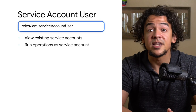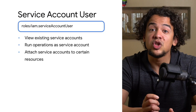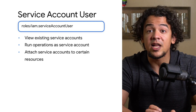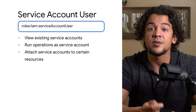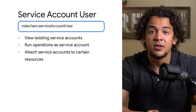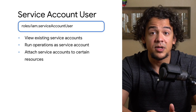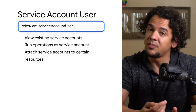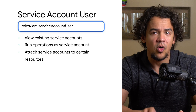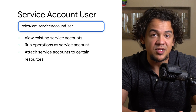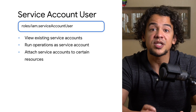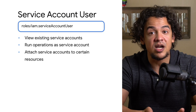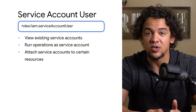Up next is the service account user role. With this role, users are allowed to act as a service account to run certain operations. For example, a user that has the permission to create compute instances, Cloud Functions, or App Engine apps will need the service account user role assigned so that they can attach a service account to any of those resources.